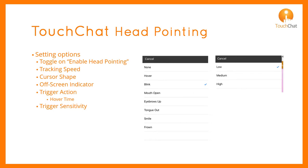Trigger sensitivity determines how big the trigger action needs to be. Select a low, medium, or high sensitivity for eye blink, open mouth, eyebrows up, tongue out, smile, or frown. If I set it to high sensitivity, it requires less movement. Low sensitivity will require a larger movement.